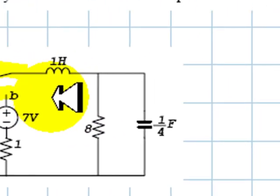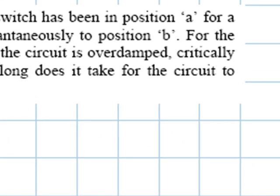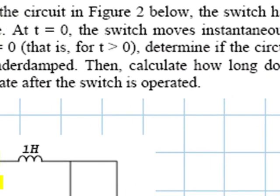For the circuit after t equals 0, determine if it is overdamped, critically damped, or underdamped.